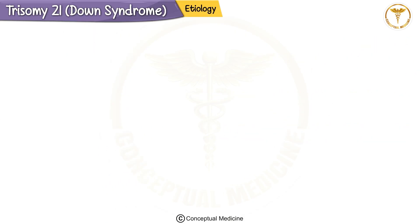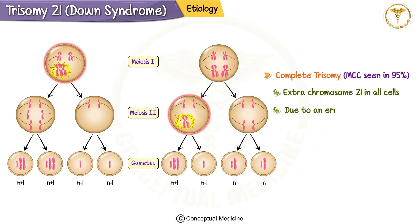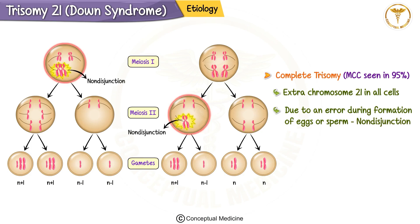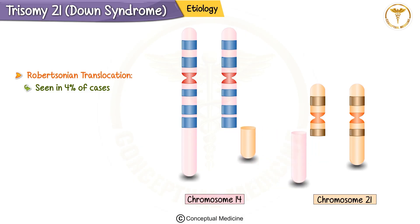Now let's talk about how this condition happens. The most common cause, seen in 95% of cases, is complete trisomy, where every cell in the body has an extra chromosome 21. This happens due to an error during the formation of eggs or sperm called non-disjunction. In about 4% of cases, a Robertsonian translocation is responsible.